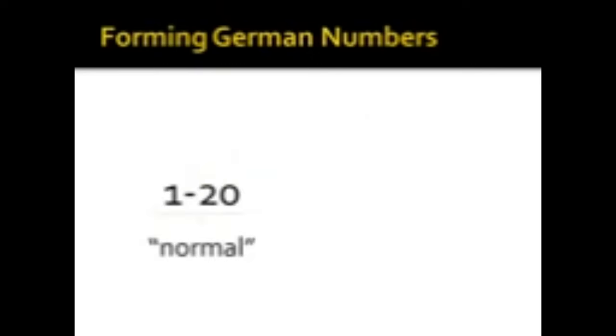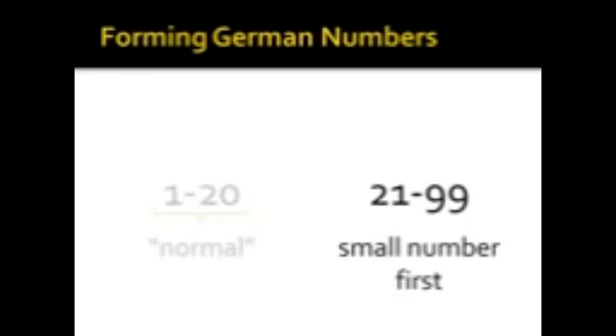So just for review really quickly. Numbers one through twenty are what we would say formed normally, that is, the same way we would do it in English. However, once we get to numbers twenty-one through ninety-nine, the small number will come first. And this is true for any number that uses hundreds or thousands. We start with the highest number, thousand. Go down to the second highest number, hundreds. But once we get to the numbers that are between twenty-one and ninety-nine, the small number comes first.